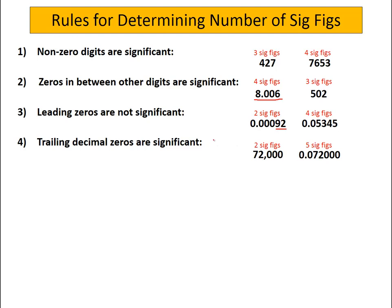However, if you do have trailing decimal zeros, they are significant, but they have to be decimal zeros. So, for example, in this second one here, 0.07200...